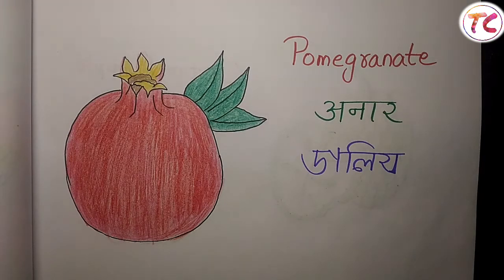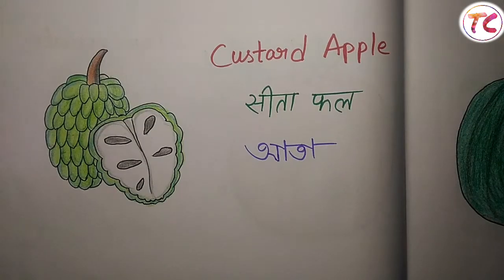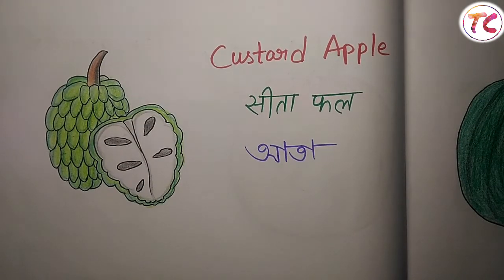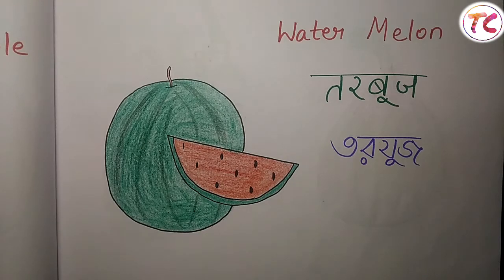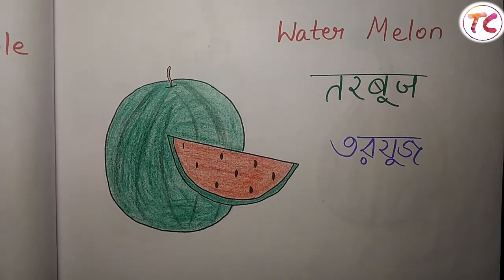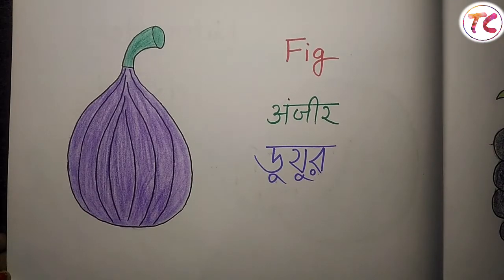Pomegranate — anar — ডালিম. Custard apple — sitaphal / aata — আতা. Watermelon — tarbuj — তরমুজ. Fig — anjir — ডুমুর.